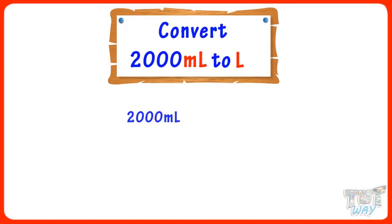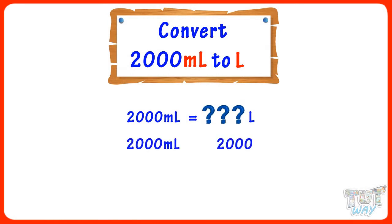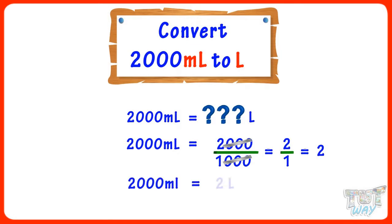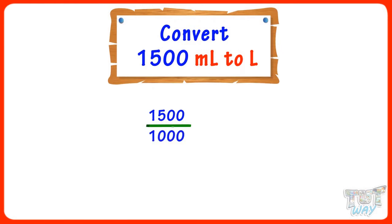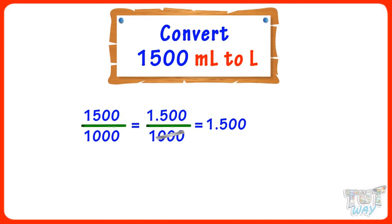2000 milliliters is equal to how many liters? 2000 milliliters equals 2000 divided by 1000 liters. 1500 milliliters equals 1500 divided by 1000 liters. Cutting three zeros and putting the decimal after three digits from the right, we get 1.500, which equals 1.5. So 1500 milliliters equals 1.5 liters.